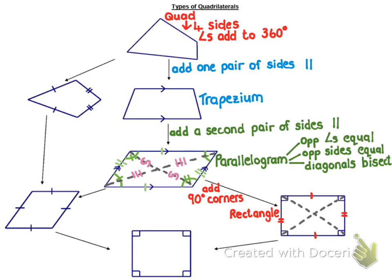But a rectangle has an extra property with its diagonals. Because what's happened to the parallelogram is it's been straightened up — it's no longer slanting — and you can see from the picture that the diagonals will be equal. So when they bisect, they actually cut into four equal parts, because the diagonals are equal in length. The extra property that a rectangle has is that the diagonals are equal.